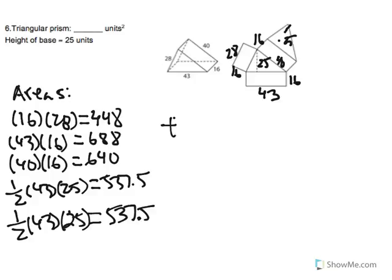So then the total, you would add all this up, gives us 2,851 units squared.